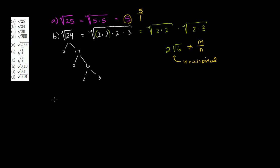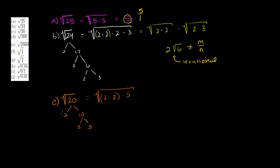Let's do part c: square root of 20. 20 is 2 times 10, which is 2 times 5. So this is the same thing as the square root of 2 times 2 times 5. The square root of 2 times 2 is 2, so it's 2 times the square root of 5. You could also think of it as 4 times 5 — square root of 4 is 2, leave the 5 in the radical: 2 square roots of 5.